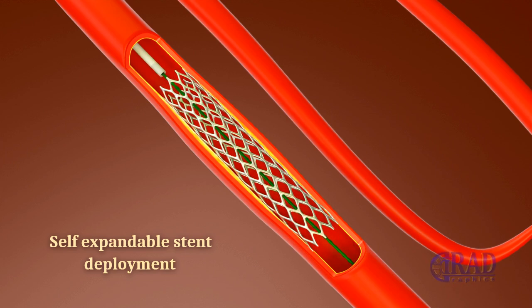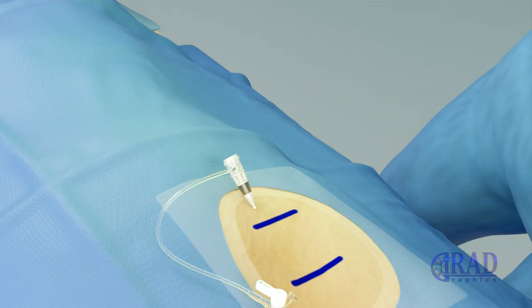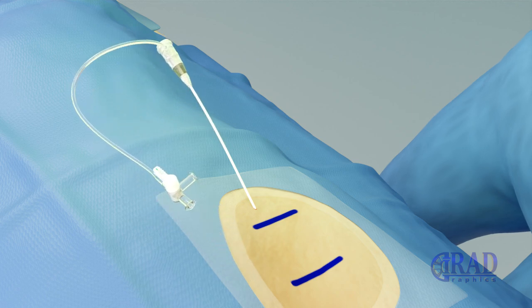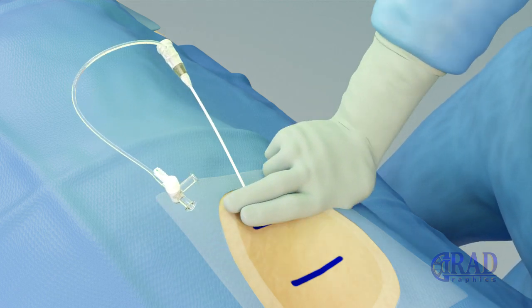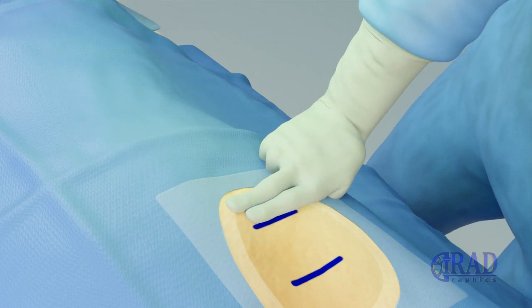Once luminal patency is achieved, the catheters and wires are removed. Finally, the sheath is gently withdrawn and eventually removed while manual pressure is applied to the artery's entry site in the groin.